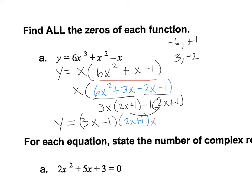So this is factored. Now I can use this factored form to find the zeros using the zero product property, setting each factor equal to zero. So my zeros are one-third, negative one-half, and zero. So I found all the zeros.